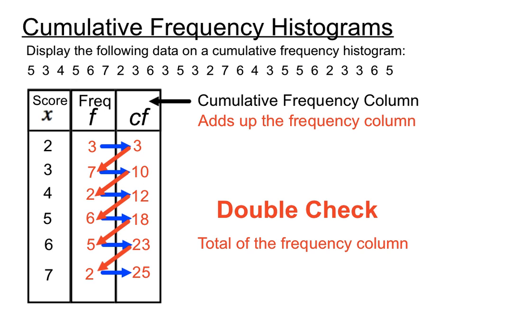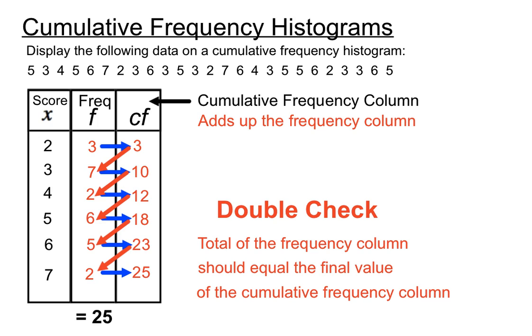We'll do the double check. The total of the frequency column should equal the final value of our cumulative frequency column. So if we add up the frequency column, we get 25. And if that agrees with the final value of the column that's supposed to add that up, then we're in business. I think we'll be confident that we've done that correctly.